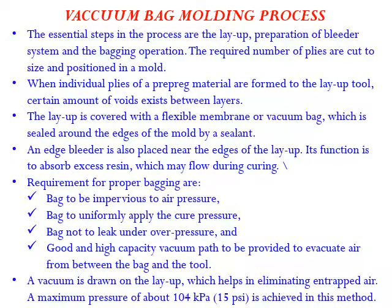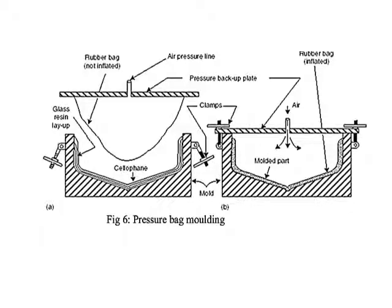Moving to the second method, pressure bag molding — as the name indicates, here we apply pressure instead of vacuum. In vacuum bag molding, we create a vacuum to get a defect-free, uniformly compacted end product. In pressure bag molding, we use pressure instead, which is needed when more compactness is required compared to what vacuum can provide. The bottom setup remains the same as the vacuum bag molding.